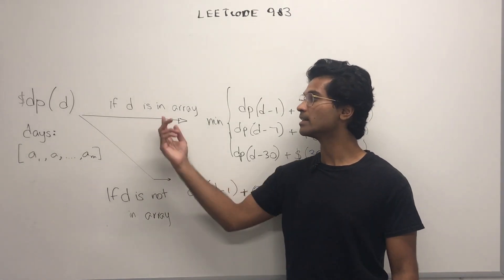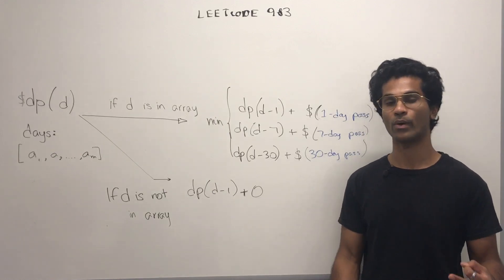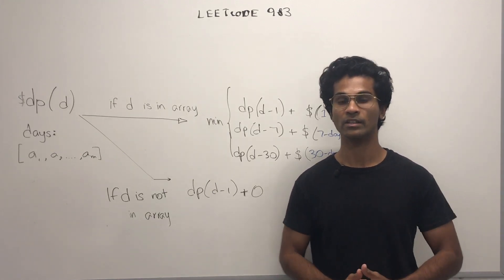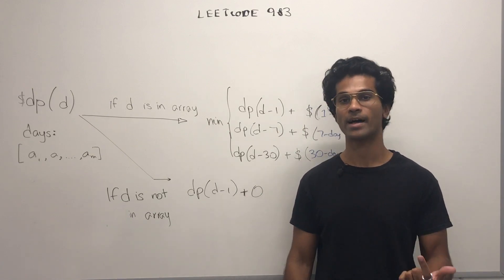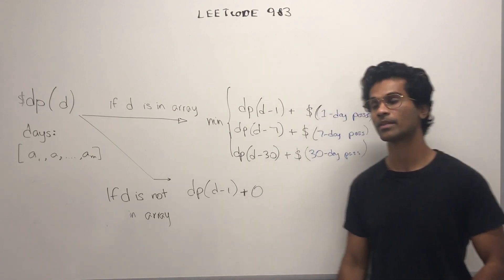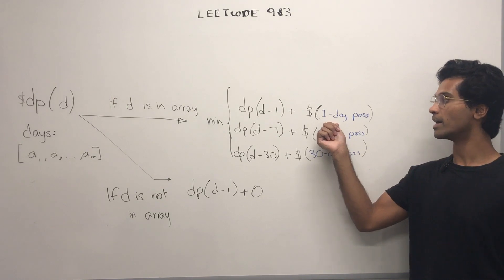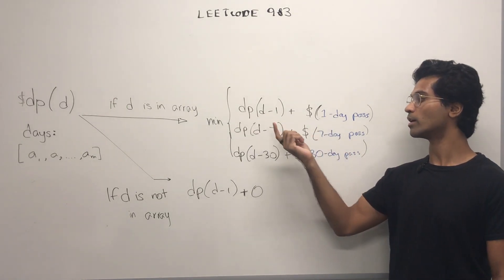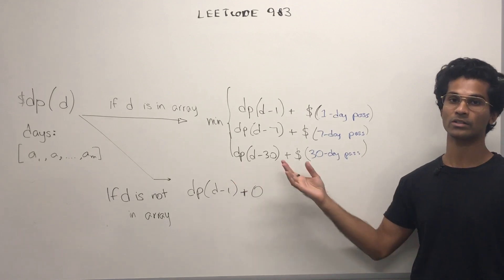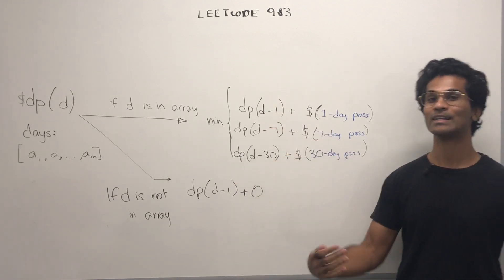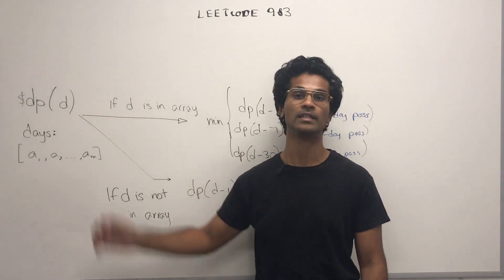Otherwise, if d is in the array, there's three different ways we can cover d. Either we're covering d using a 1-day pass, a 7-day pass, or a 30-day pass. So, if we're going with a 1-day pass, it's going to be dp of d minus 1, otherwise dp of d minus 7, or dp of d minus 30. The minimum of any of these is going to be our dp of d.